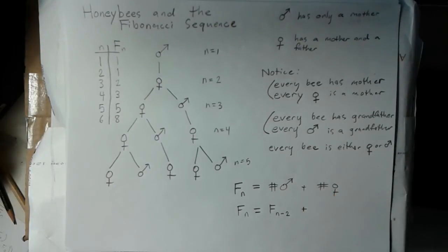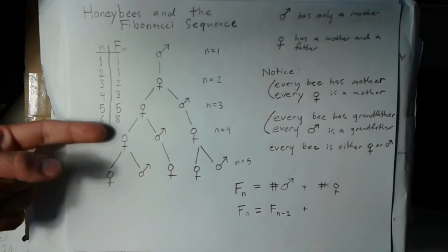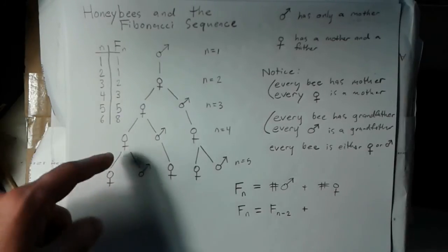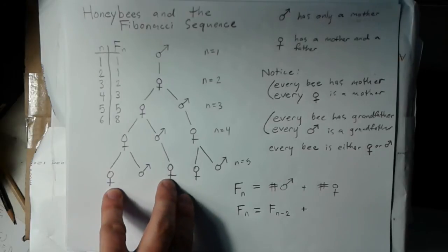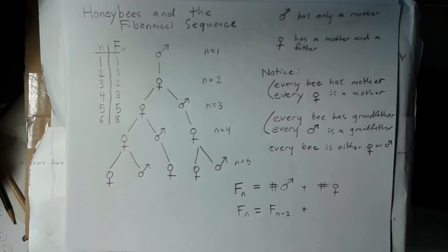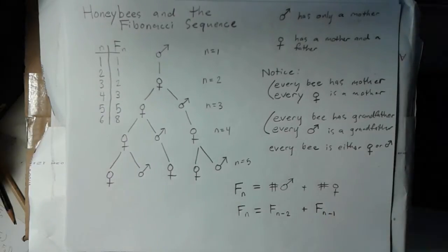You can do the same thing for the number of females. Every female is the mother of somebody, and every bee has a mother, so there's three bees in this generation and there's three queens in this generation. The number of females in a given generation is just the number of bees in the previous generation.